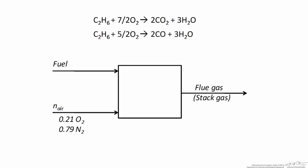The goal of this screencast is to look in detail at the idea of percent excess air in the context of combustion reactions. Here we have the combustion of ethane. Any combustion reaction involves the reaction of a hydrocarbon or other fuel source with oxygen. Ethane reacts with oxygen to form carbon dioxide in the complete combustion reaction, or to form carbon monoxide in the partial reaction.